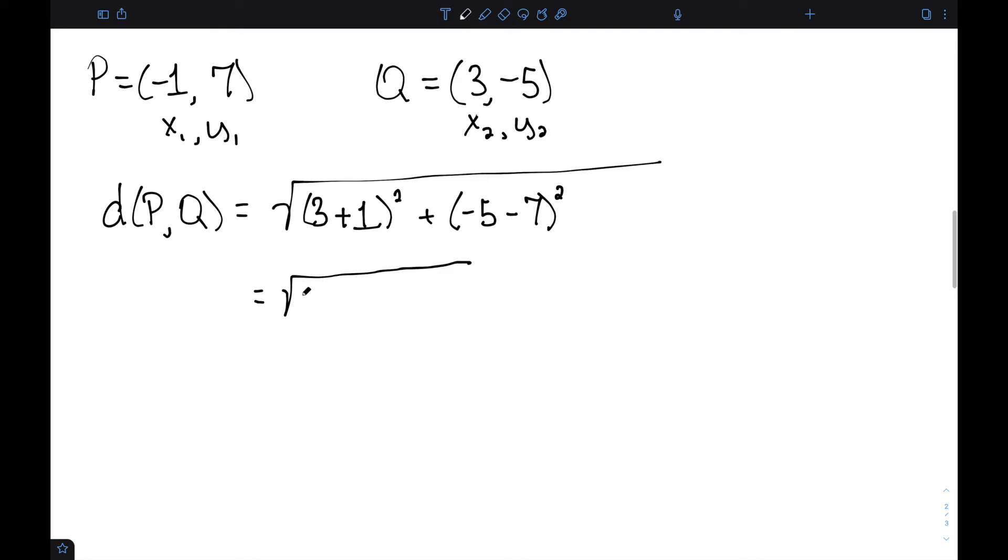3 plus 1 is 4, so this is 4². And -5 minus 7 is -12, so (-12)². 4² is 16, and 12² is 144. This tells us we get the square root of 160.